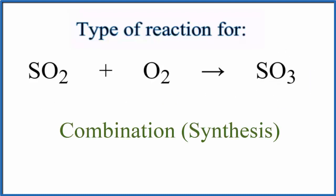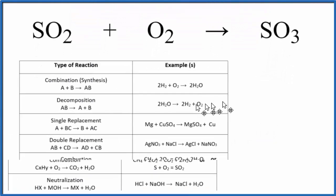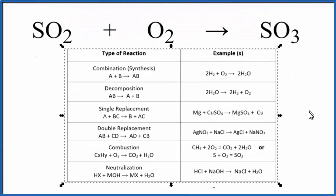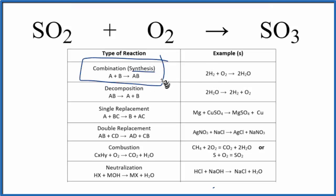If we look at this table of common chemical reactions, common types of chemical reactions, we can see right here is combination. It's also called a synthesis reaction. The general format is A plus B.